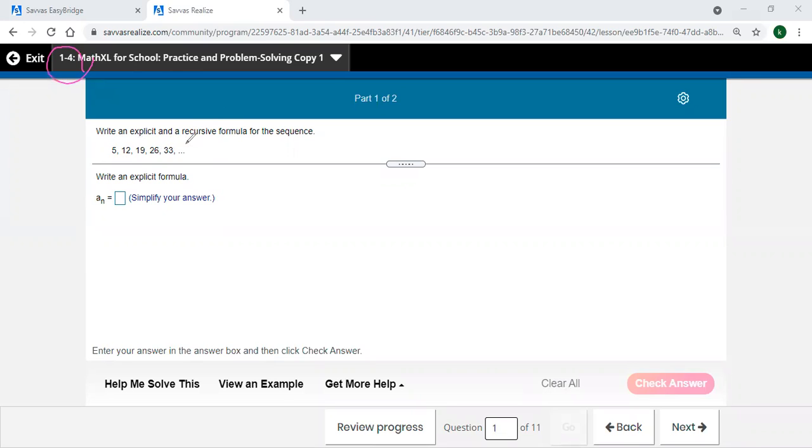Looking right away, you can see that each time it's adding 7. When you add a constant number to get from one number to the next, that's called an arithmetic sequence.